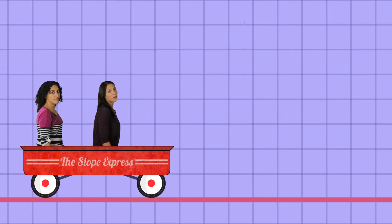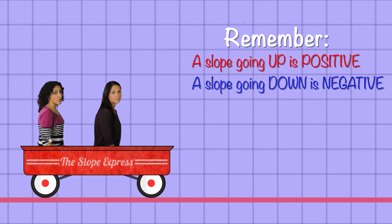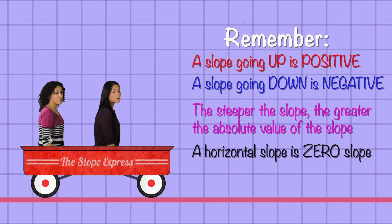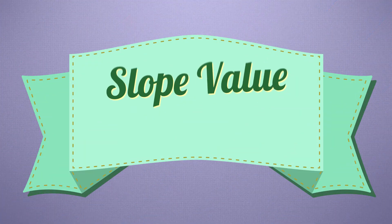So that's a quick ride through the slopes. Remember, a slope going up is positive. A slope going down is negative. And the steeper the slope, the greater the absolute value of the slope — that means if it's positive, it's really positive, and if it's negative, it's really negative. A horizontal or flat slope has zero slope, and a vertical slope is considered undefined. Don't ride your buggies on the undefined slopes — it's a long way to fall. And that's slope values in two minutes.